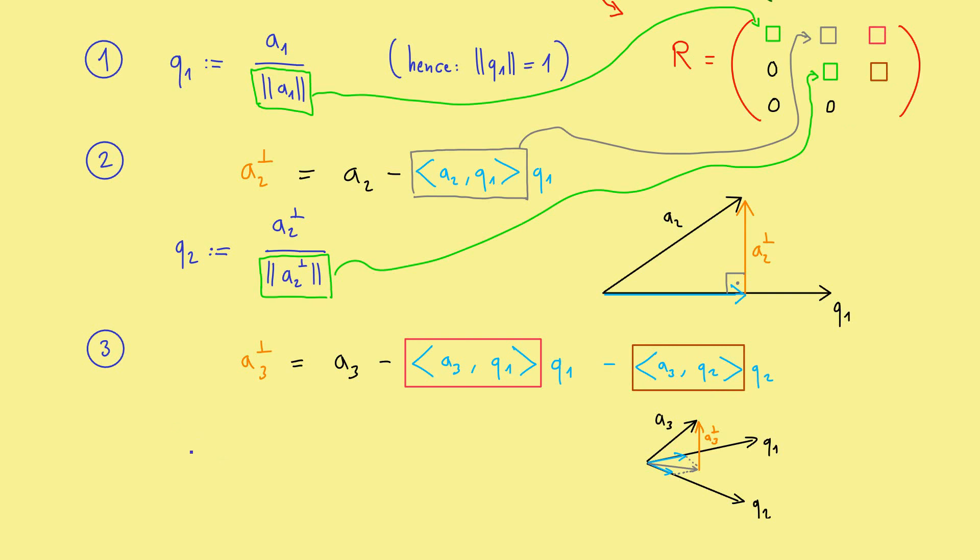The only part that is now missing is Q3, but you know how to calculate it. We just normalize our A3 perpendicular. So, dividing by the norm. And the same way as before, this norm here has to be on the diagonal of R. So, here in this corner. And that's how the QR decomposition works.